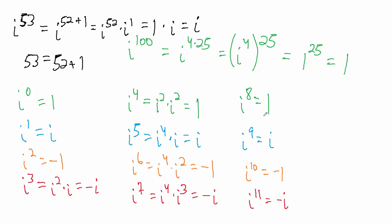To summarize the pattern: i raised to a multiple of four is one. If we raise i to one more than a multiple of four — for example one, five, nine, thirteen — the result is i. If we raise i to two more than a multiple of four — like two, six, ten — we get negative one. If we raise i to three more than a multiple of four — for example three, seven, eleven — we get negative i. That pattern just keeps repeating.